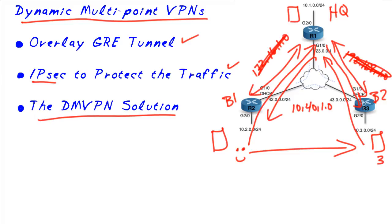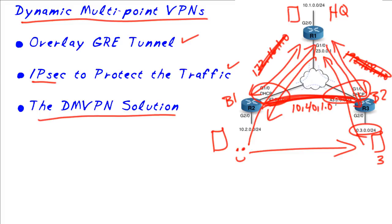Then they'll each report their IP addresses, received through DHCP or some other method, up to the hub router. If R2 needs to reach the 10.3 network, R2 can ask the hub: what's the global address for R3? I'd like to talk to him. R1 responds, and then R2 can build a direct GRE connection — an IPsec connection — between itself and R3, cutting out the middleman.